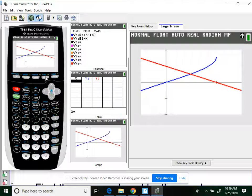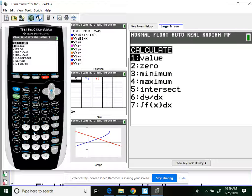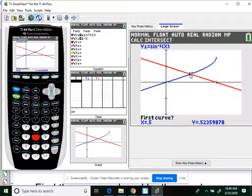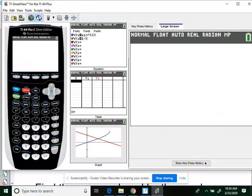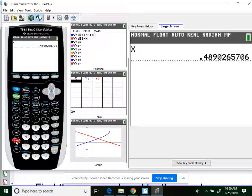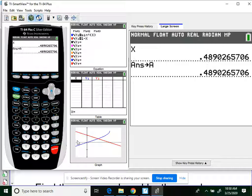Nice. Now we need to find this point of intersection. So I'm going to hit second, trace, intersect, which is 5. The cursor ended up being right where I needed it to be. Enter, enter, enter. So now I need to be as accurate as possible with these. I'm going to store this into my calculator. Right now my x value is 0.489.